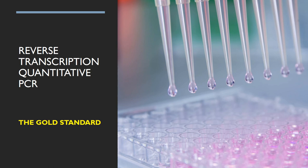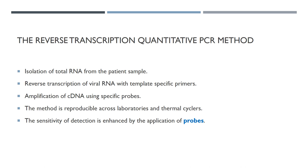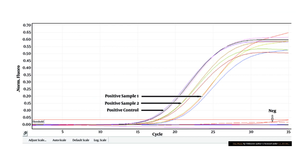The method which was used during the current pandemic and which is the best available method for future pandemics is what is known as reverse transcription quantitative PCR. This is considered as the gold standard for multiple reasons. In this method, the total RNA is isolated from the patient sample. It is reverse transcribed with specific primers and the reverse transcriptase. cDNA is amplified using specific probes. The method is reproducible across laboratories and thermal cyclers. And the sensitivity of detection is enhanced by the application of probes.